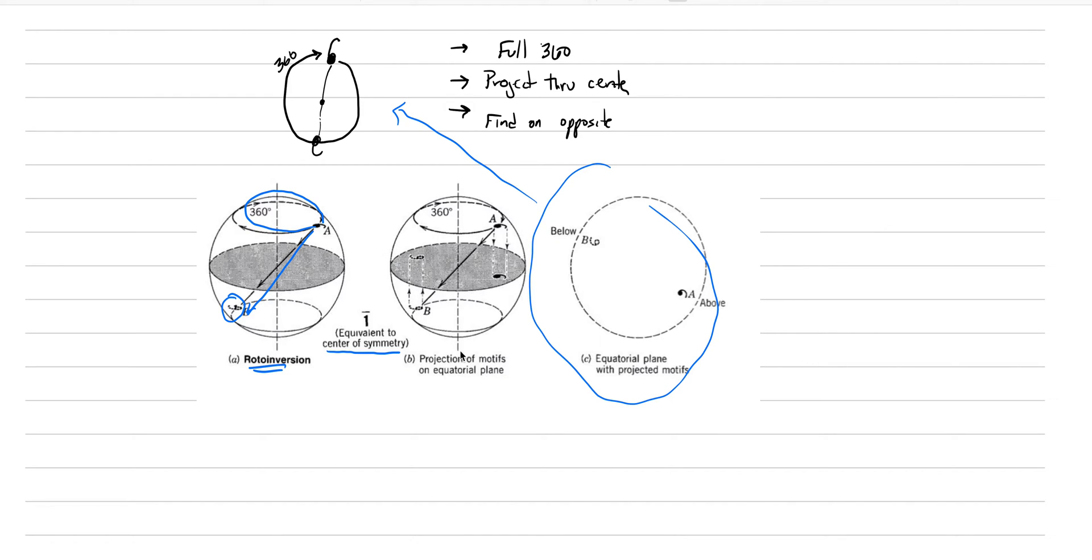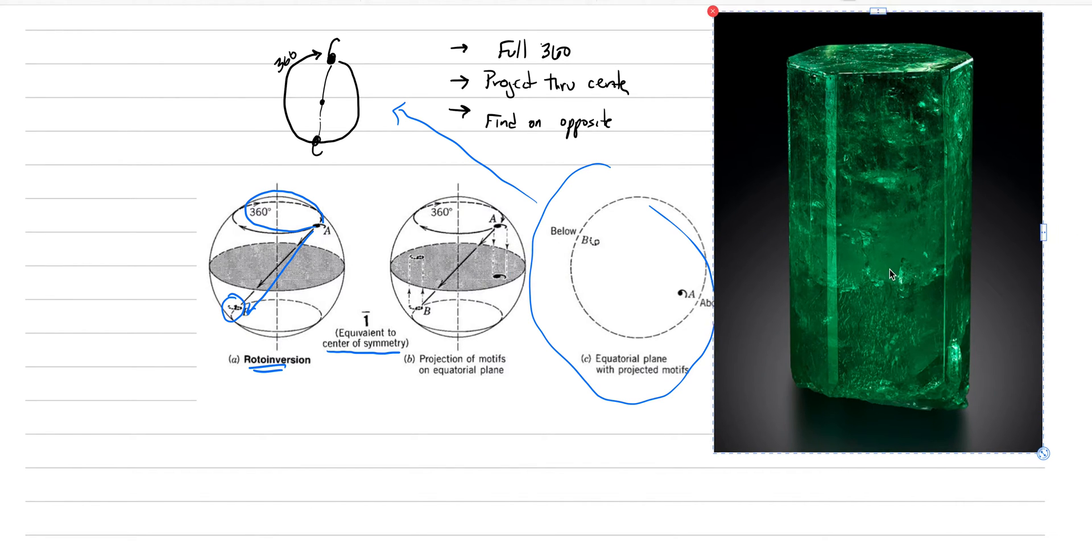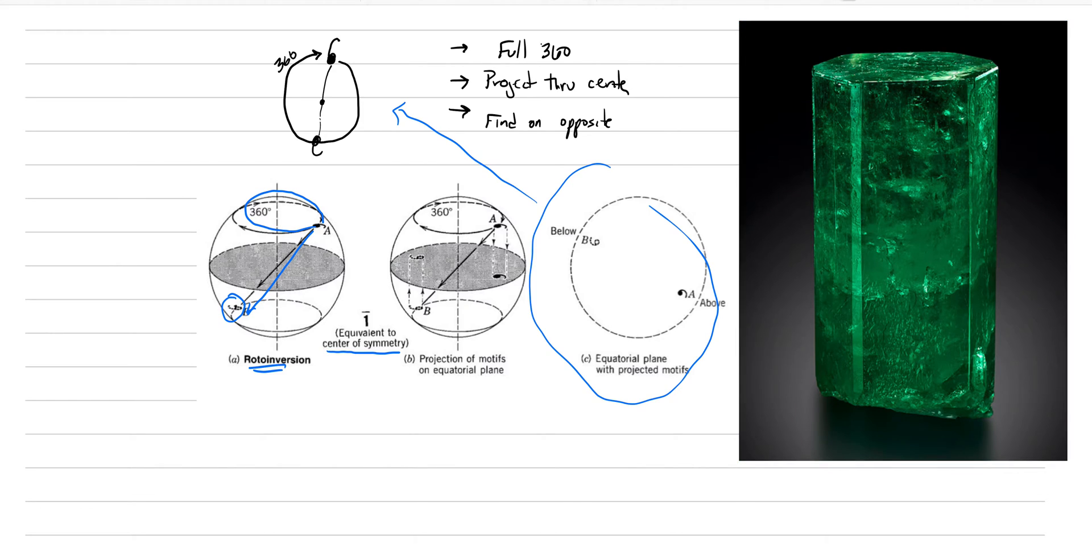Before we move on to the next, let's just do this with a real crystal. This is a beautiful emerald crystal. Here's our point. We are going to rotate around 360 degrees, fire through the crystal, and boom, we find it on the other side. One of the corners of this hexagonal prism. We could have done that for any point. We would say that this crystal has an inversion point, a center of symmetry.